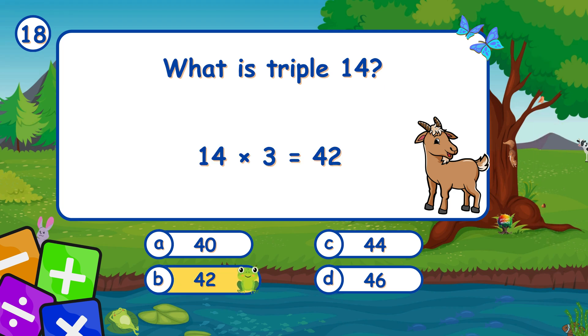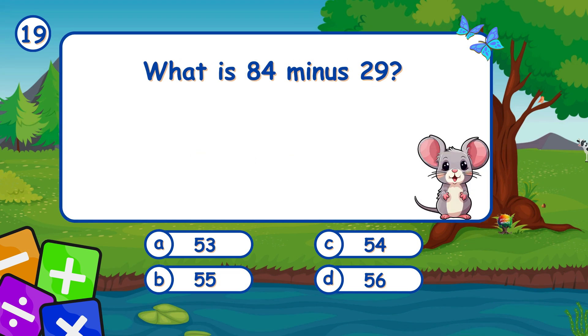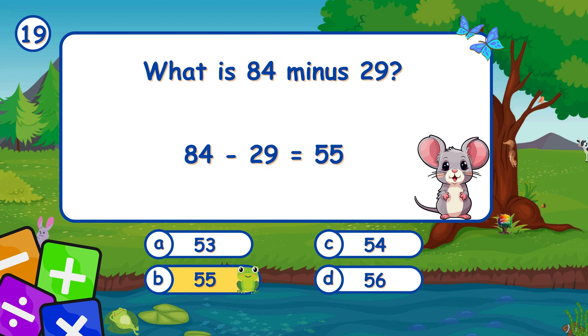What is triple 14? It's B, 42. Triple of 14 is 42. What is 84 minus 29? It's B, 55. Subtracting 29 from 84 leaves 55.